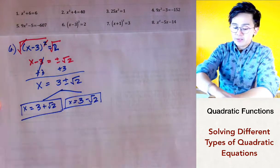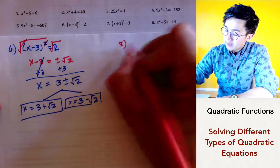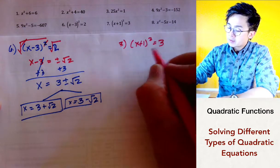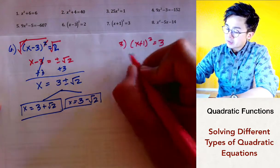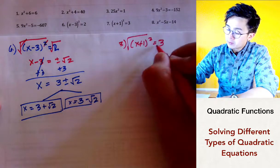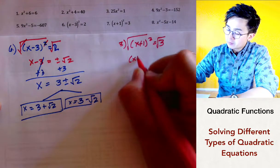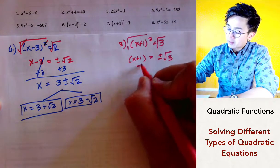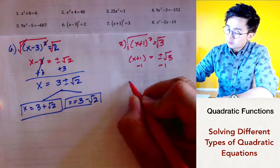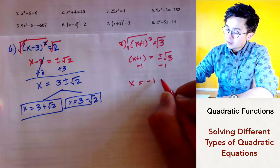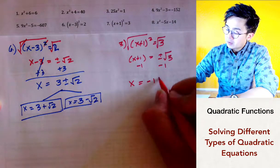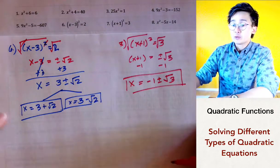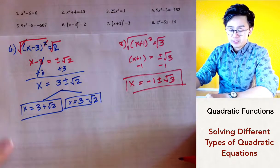For problem number seven, we have x plus 1, quantity squared, equal to 3. Using the same approach, we take the square root of both sides, giving us x plus 1 equals plus or minus square root of 3. Subtracting 1 on both sides, we get x equal to negative 1 plus or minus square root of 3. That is our solution for problem number seven.